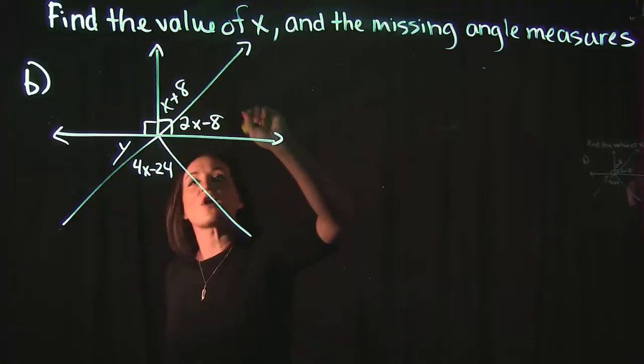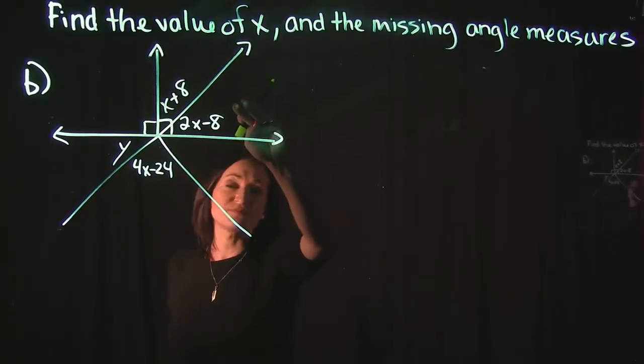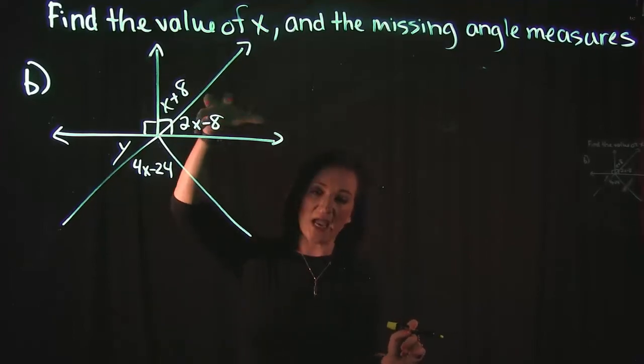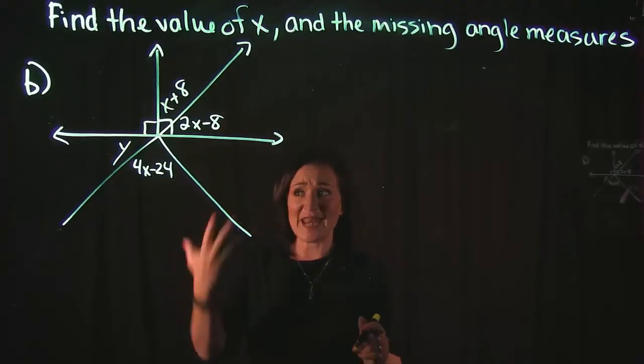I have two different angles. I have the x plus 8 and the 2x minus 8. Since both of those are within this angle, that tells me that both of these should add up to 90 degrees.